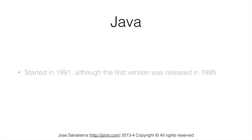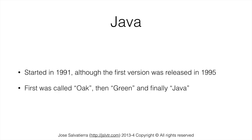Java started in 1991, although the first version was released in 1995, so from its conception it took four years to release the first version. It went through a few names: first Oak, then Green, then Java. Oak was copyrighted, that's why they had to change the name. And Java was thought to come from Java Coffee that the developers often consumed.